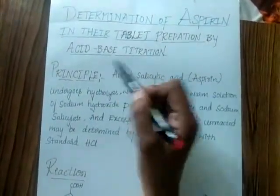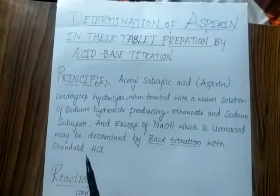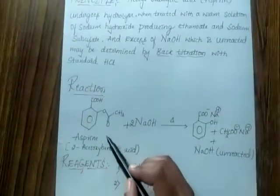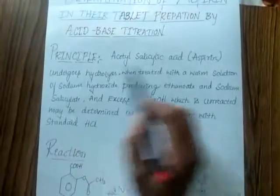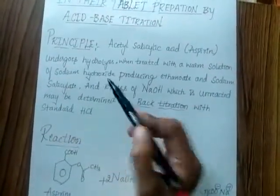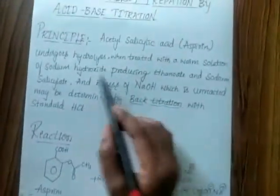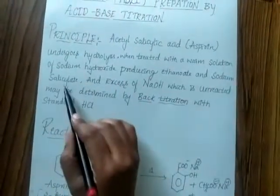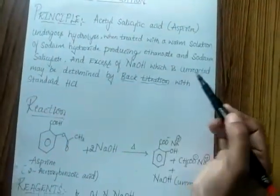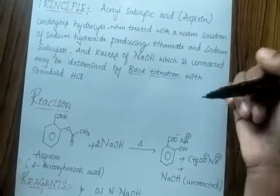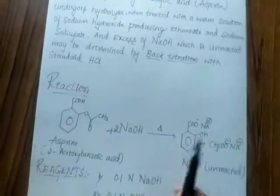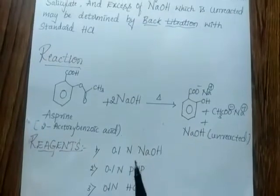The experiment is the determination of aspirin in tablet preparation by acid-base titration. The principle involved is that acetylsalicylic acid undergoes hydrolysis when treated with a warm solution of sodium hydroxide, producing ethanoate and sodium salicylate. The excess unreacted NaOH may then be determined by back titration with standard HCl.